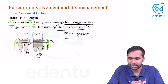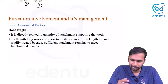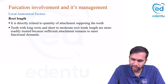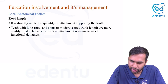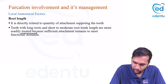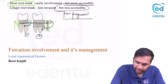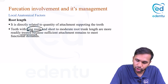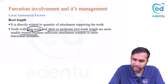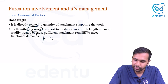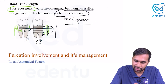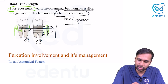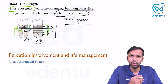Root length is directly related to the quantity of attachment supporting the teeth. Teeth with long roots and short to moderate root trunk length are more readily treated for furcation involvement because sufficient attachment remains to meet functional demands. Long roots with short trunks — furcation can be involved early, but once involved they can be readily treated.